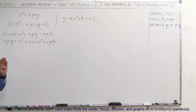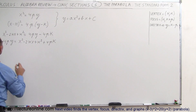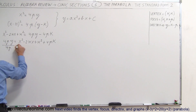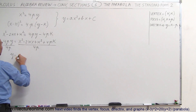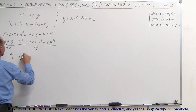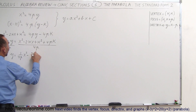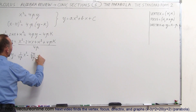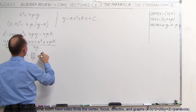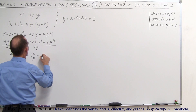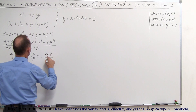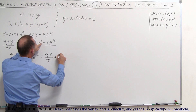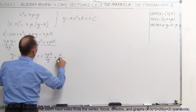Now we're going to divide both sides of the equation by the coefficient 4p, so we have y isolated. Dividing both sides by 4p, we get y is equal to 1 over 4p times x squared, minus 2h divided by 4p times x, plus 4pk divided by 4p, plus h squared divided by 4p.